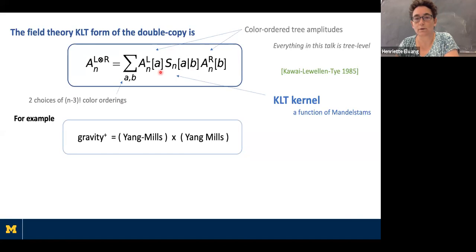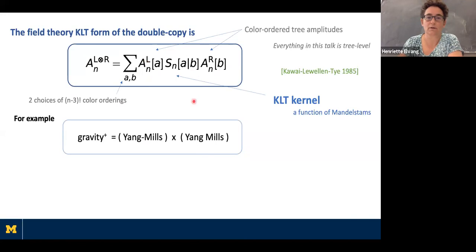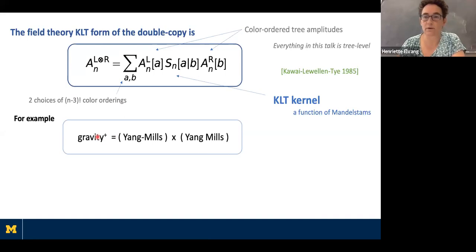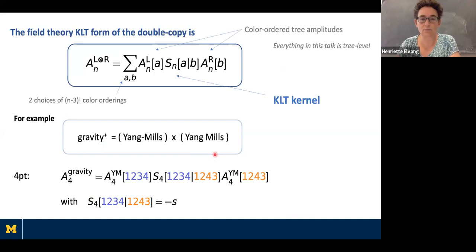This talk is about a new framework for thinking about the double copy that allows us to generalize it via a procedure we call the KLT bootstrap. The KLT formula states that you take gauge invariant color ordered single trace amplitudes at tree level from a left sector theory — which could be Yang-Mills — and a right sector theory, also Yang-Mills, and multiply them together using the KLT kernel. This kernel is a function of Mandelstam variables, and it's a sum over n minus three factorial color orderings. It's well known that Yang-Mills times Yang-Mills gives gravity plus the antisymmetric tensor two-form and the dilaton.